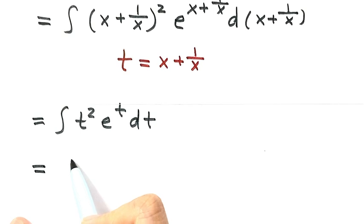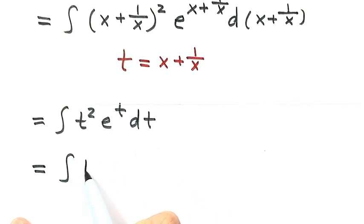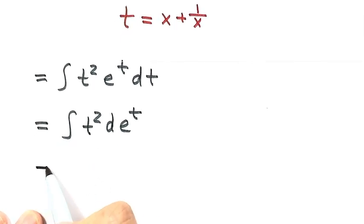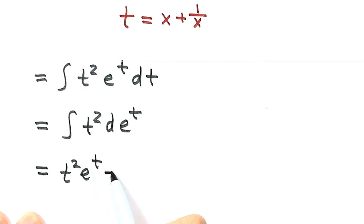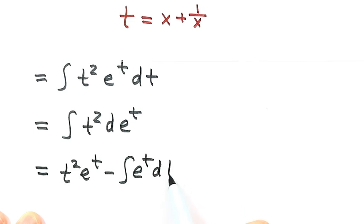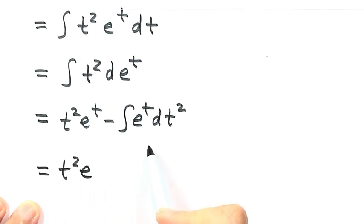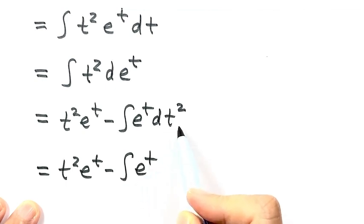Next let's combine these two together. Put this back here — that's t squared times d of e to the power t. For this integral we can use integration by parts. That's t squared times e to the power t, minus the integral of e to the power t times d of t squared. Here, d of t squared is just 2t dt.